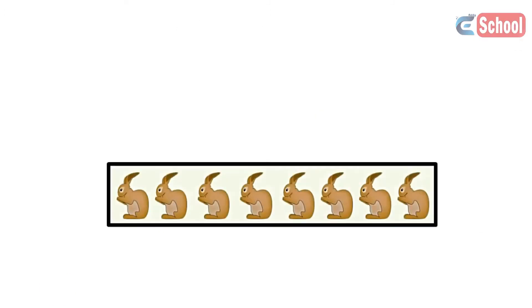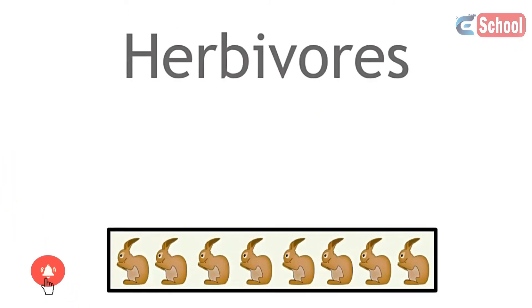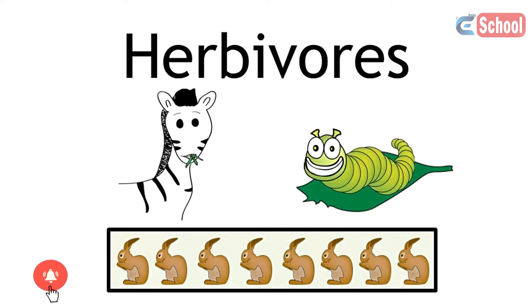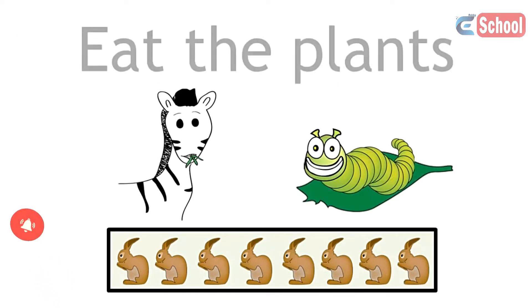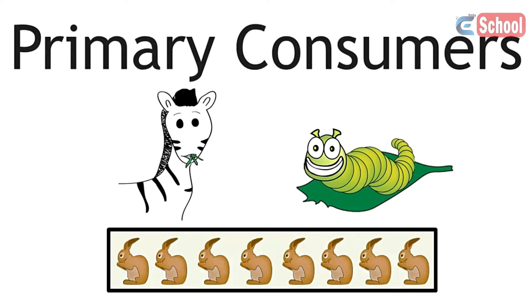From the producers, the second trophic level is the herbivores, the organisms that eat the plants. These organisms are called the primary consumers. They are the first step when nutrients are consumed.